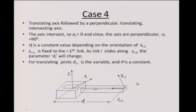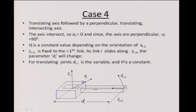The fourth case we want to look at is two successive translating axes. In this case the axes intersect, so a_i is 0. If the axes are perpendicular, alpha_i is 0; if the two z_i and z_{i-1} are at 90 degrees, alpha_i is 90 degrees. The interesting part is that in this case theta_i has a constant value. When z_{i-1} is defined and z_i is defined, I establish x_i as the common normal — or equivalently as the cross product.